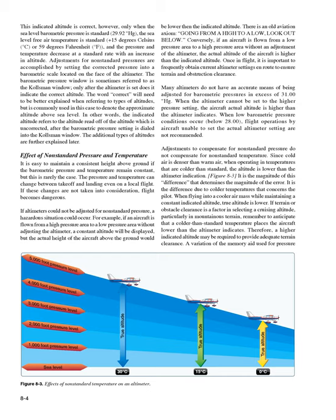Knowing the aircraft's altitude is vitally important. The pilot must ensure the aircraft is flying high enough to clear the highest terrain or obstruction along the intended route. It is especially important to have accurate altitude information when visibility is restricted. To clear obstructions, the pilot must constantly be aware of the aircraft's altitude and the elevation of surrounding terrain. To reduce the possibility of a mid-air collision, it is essential to maintain altitude in accordance with air traffic rules.